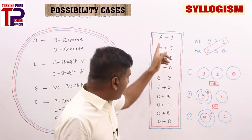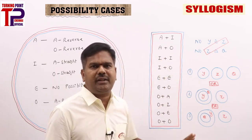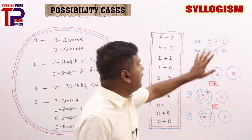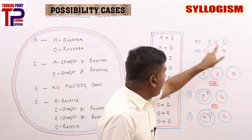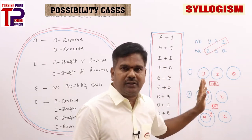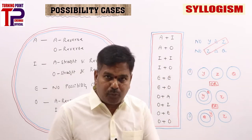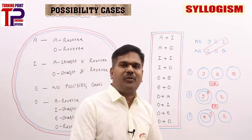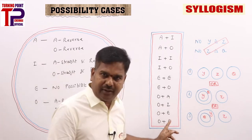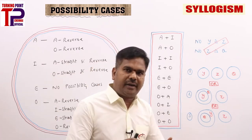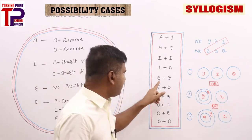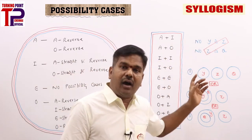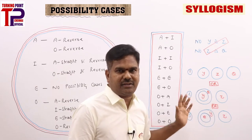For all these cases, everything follows: A-straight, A-reverse, O-straight, O-reverse, I-straight, I-reverse, E-straight, E-reverse. Whenever these two E statements are considered, all possibilities come into picture. I need to prove that, and I tried with all these statements — got the right answer. I will take E plus E as example: 'no Y is Z and no Z is Q' can be represented in three ways in Venn diagrams.